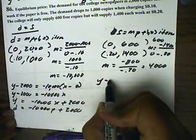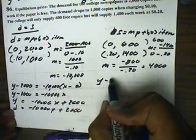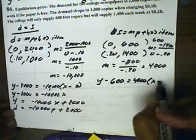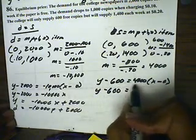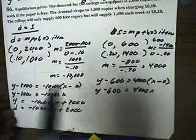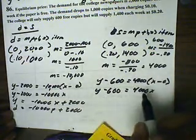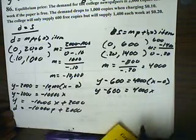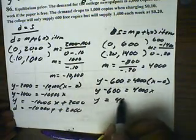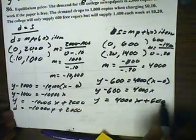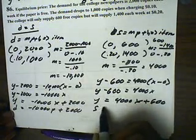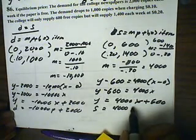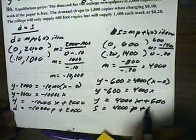And now we have y minus 600 equals a slope of 4,000 times x minus 0. 4,000 times x is 4,000x. We're going to take this negative 600, put it on the other side. And so, this will be our supply function. So, supply is 4,000 times x, or p, price, plus 600.